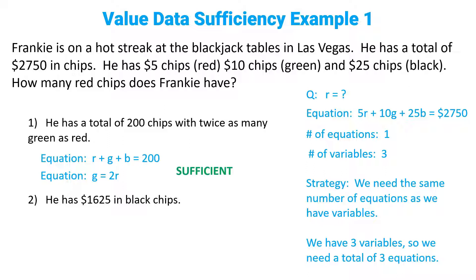Statement number two, he has $1,625 in black chips. What does that mean in math? That means 25b equals $1,625. We said that we needed two more equations, but statement two only gives us one equation. That's insufficient.